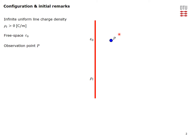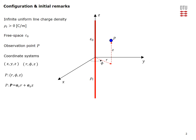The objective is to determine the field at observation point P. We introduce two coordinate systems — rectangular x y z and cylindrical r phi z — so that the line charge coincides with the z-axis. The location of point P is given by coordinates r, phi, and z, or alternatively by the position vector shown. We first postulate that the electric field is in the radial direction and that its magnitude depends only on the distance from the charge density.